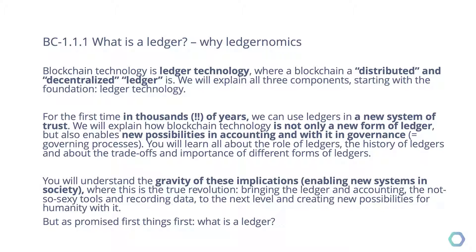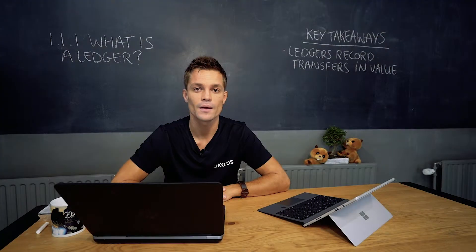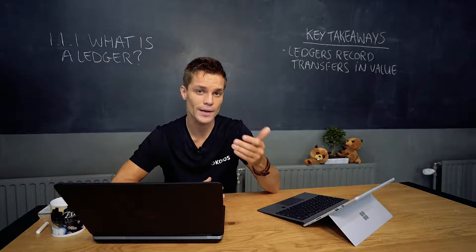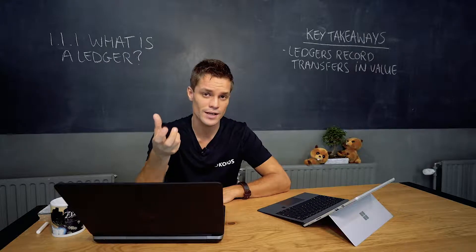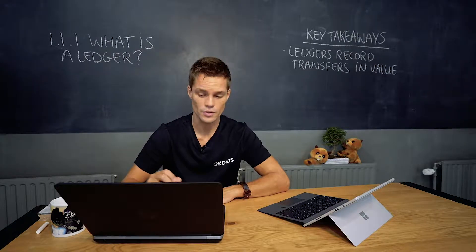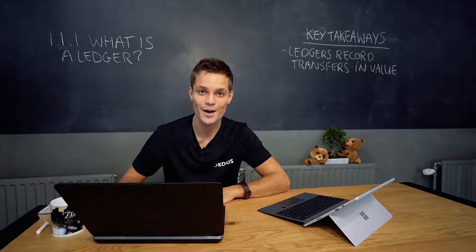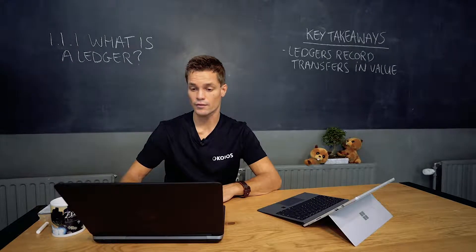Every time a ledger changes, society tends to change with it. So not only does blockchain offer a new way to record transactions, it also has a huge societal impact, which makes this a very interesting time in human history, because we are at a tipping point of a possible new society. Blockchain basically is a trust tool, because it records transactions in a different way. To understand this, you need to understand what a ledger is, and that we will do in the very next slide.